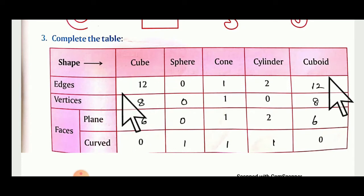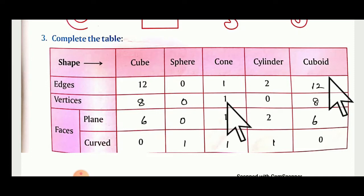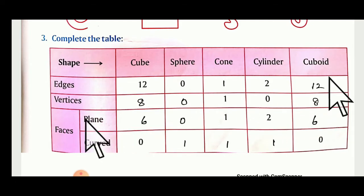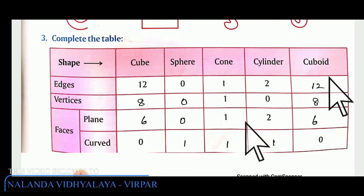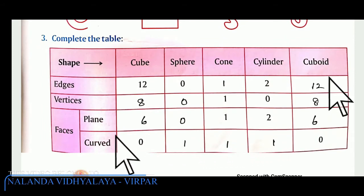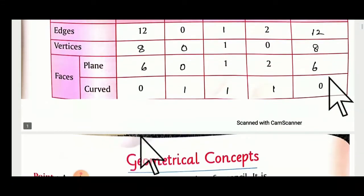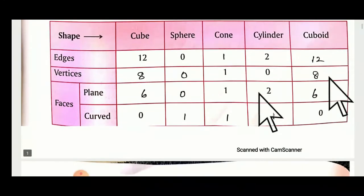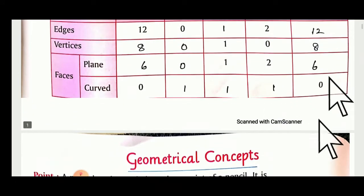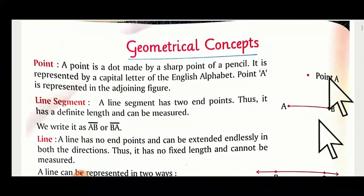Vertices: how many vertices in a cube? 8. Sphere has no vertices — 0. Cone has only 1. Cylinder has 0, and cuboid has 8. Faces — plane as well as curved: cube has 6, sphere 0, cone 1, cylinder 2, and cuboid 6. For curved faces: cube 0, sphere 1, cone 1, cylinder 1, cuboid 0.